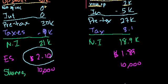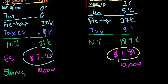If you grow both of their revenues, gross profits, or operating profits by the same amount, you'll actually see that the leveraged entrepreneur's earnings per share is growing faster. Given that, someone might say that because of the leverage, they're willing to pay an even higher multiple. So it's not crazy to pay the same multiple for both of these entrepreneurs.